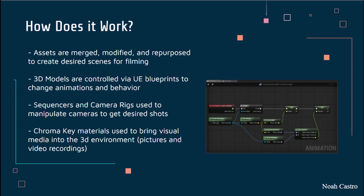Blueprints are used to define classes and objects in Unreal in place of a dedicated programming language. Third, we have the sequencers and camera rigs used to manipulate the editor's cameras to get the necessary shots for filming. The sequencers give users the ability to create intricate cinematics and visuals by way of keyframes that the camera can follow. The camera rigs are used to shoot more defined paths such as panning and sweeping shots.